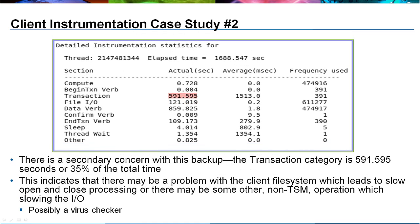A secondary concern in this case study is the amount of time spent in the Transaction category, which comprises 35% of the total time. Time in the Transaction category covers non-TSM client file system operations — it could indicate slow file open and close processing on the client file system. Another possible cause is an antivirus scanner slowing file operations. Generally speaking, antivirus scanners should be disabled for TSM backup operations.